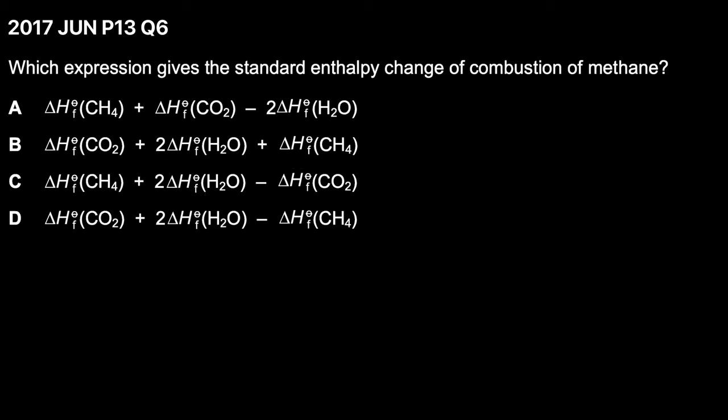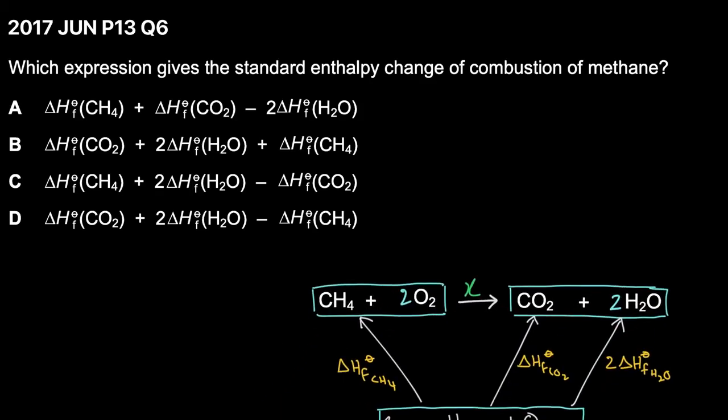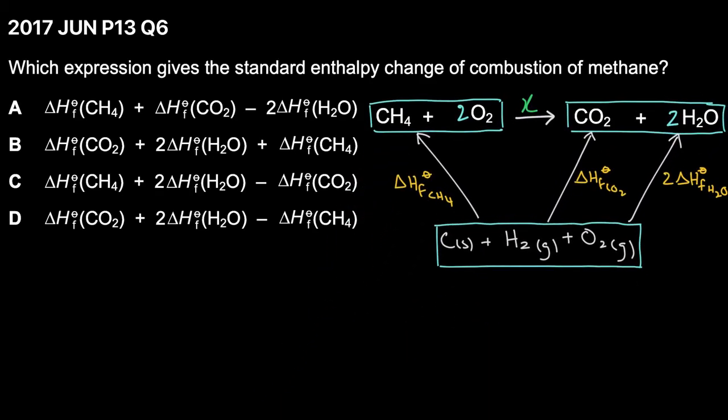Now let's draw a Hess cycle. In the Hess cycle we're going to show the combustion of methane, which I've shown in the first two boxes over here. That's the unknown, that's the expression we're trying to figure out. Because they've given us all the delta H formation values, I've written down the elements in the box below.